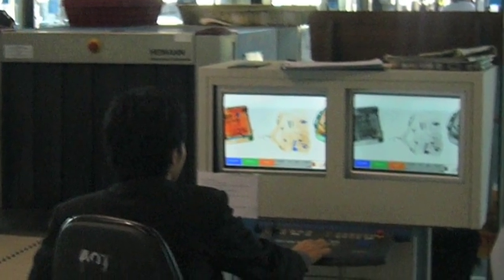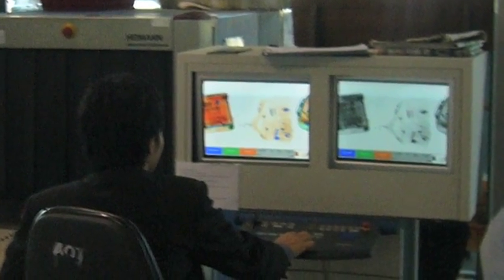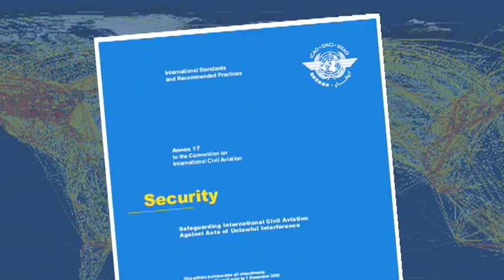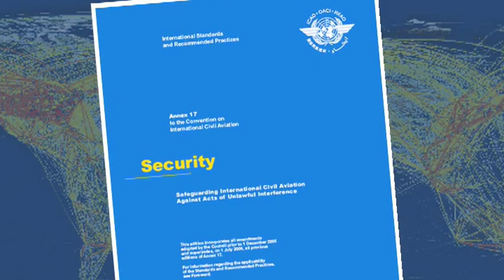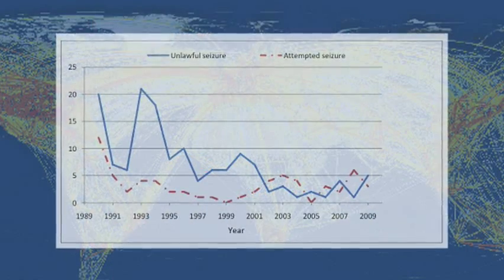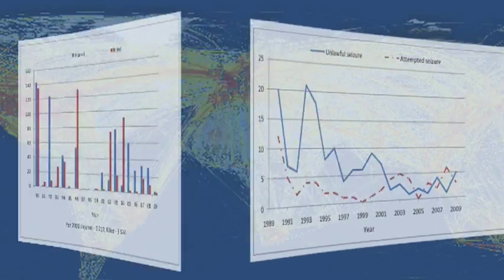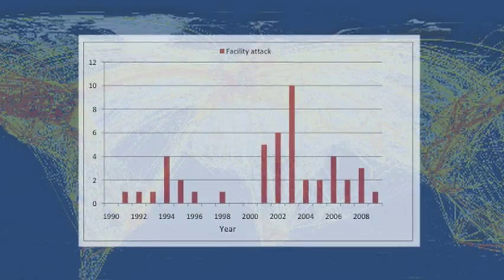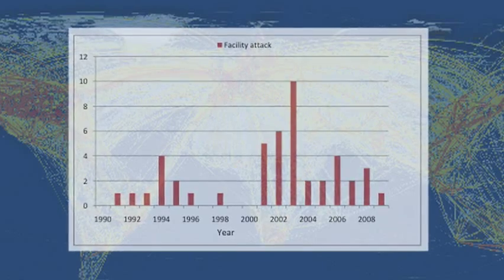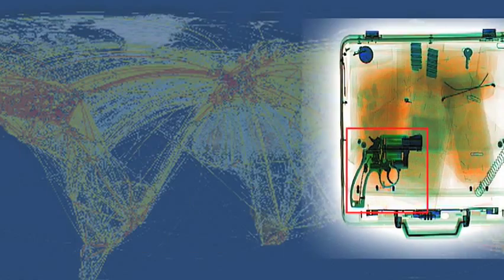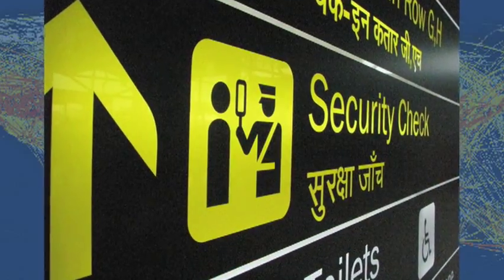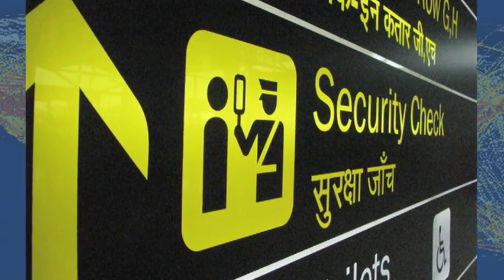To monitor aviation security, ICAO has established a database on acts of unlawful interference in civil aviation since 1970. This information provides a better understanding of the threat civil aviation is facing and how to respond to it on a global and regional level. The data on these acts may reveal the successful implementation of a particular security measure.